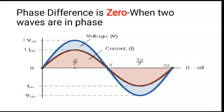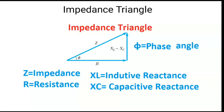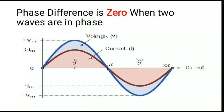Now let us see what is meant by phase angle and phase difference. The phase angle is the angle between the hypotenuse Z and R in the impedance triangle.